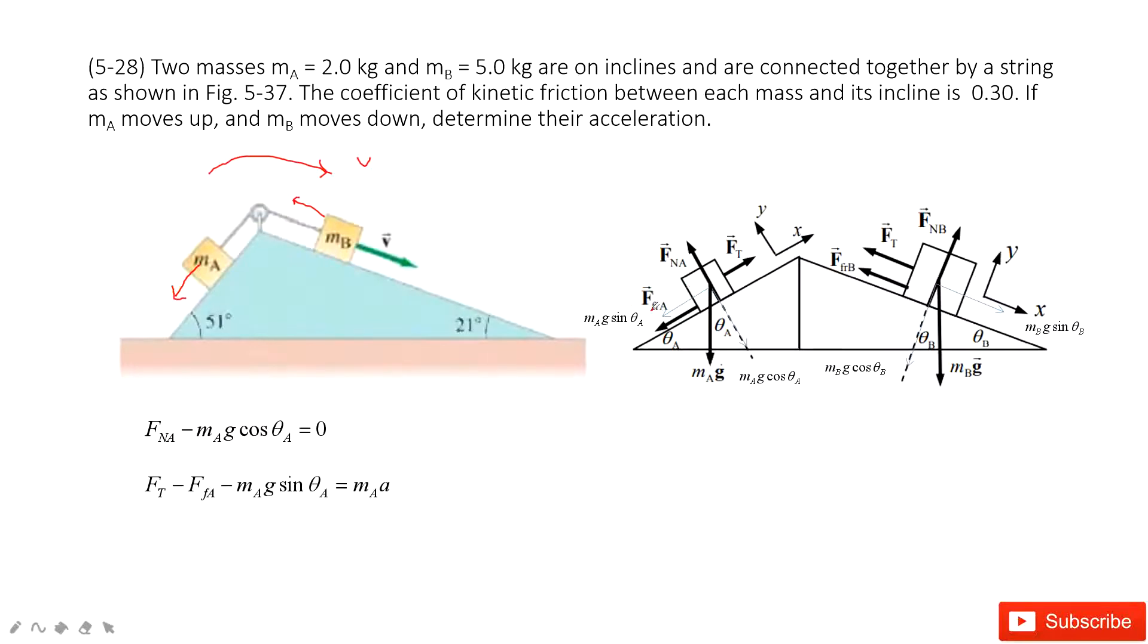Now we look at the x-component. So we have the tension minus the friction minus mg sin theta equals mass times acceleration. As the friction is easy, friction is mu k, the coefficient times the normal force.